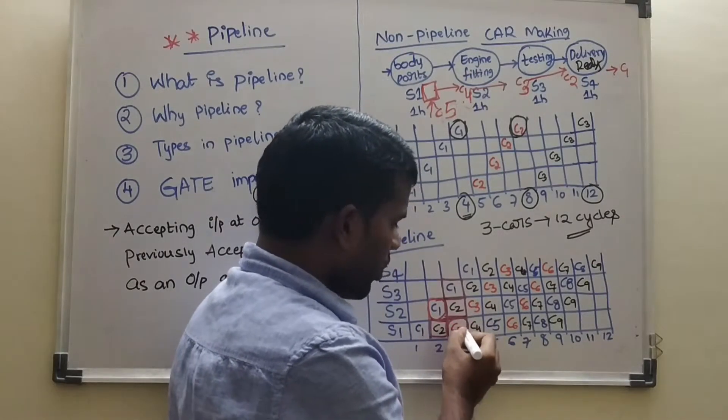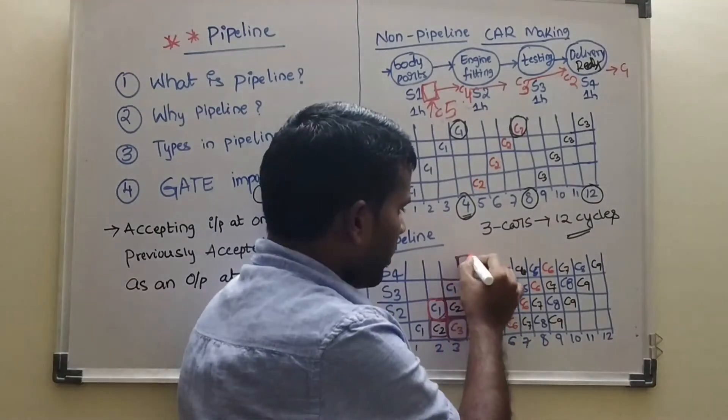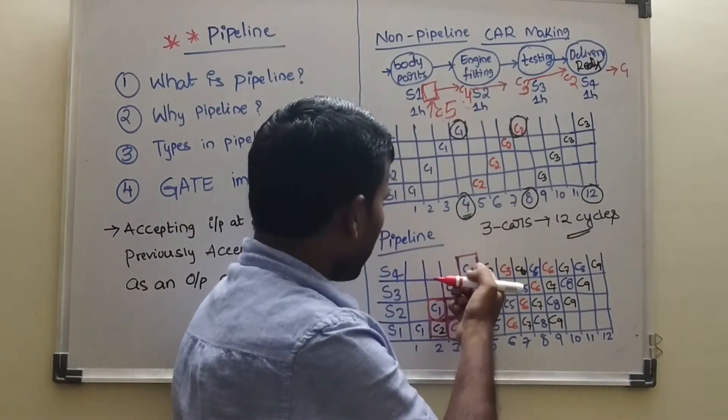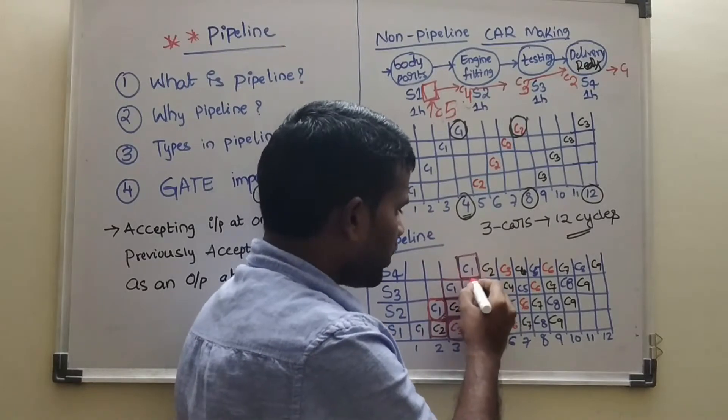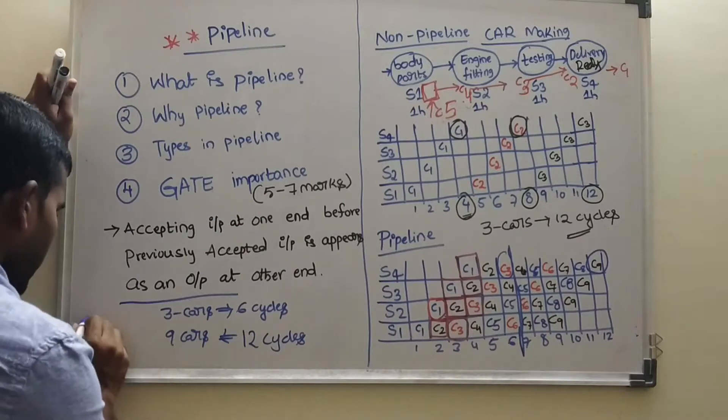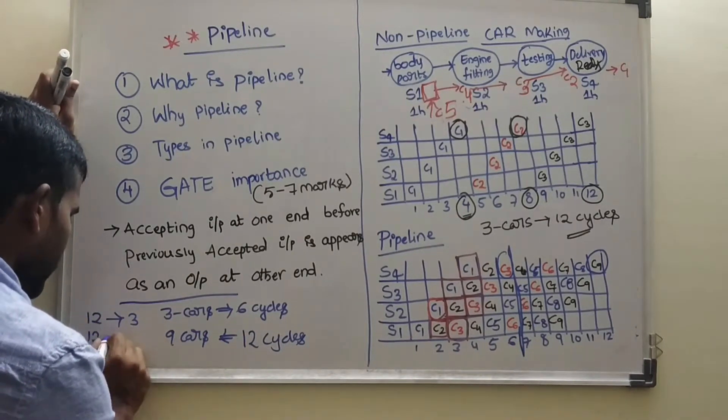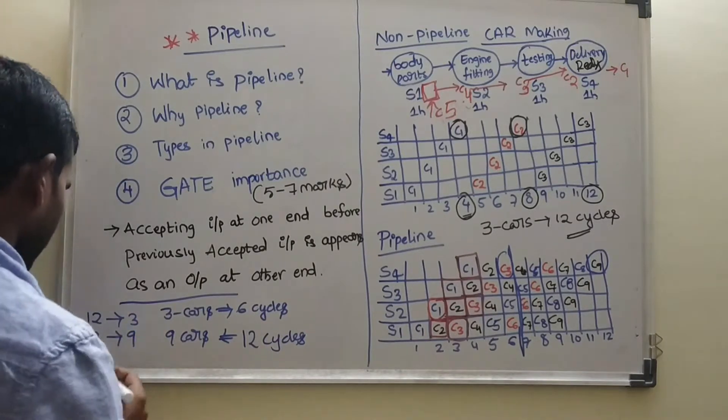So we can put one more car 3 into manufacturing process. Here C1 comes to third stage. C2 moves to third stage. And like this. In 12 cycles, you finish third cars.